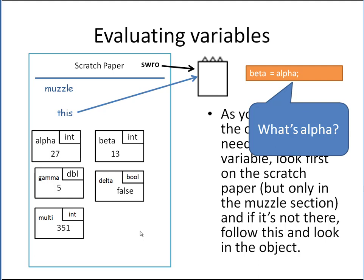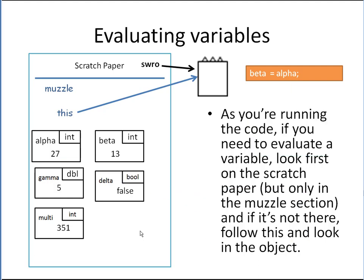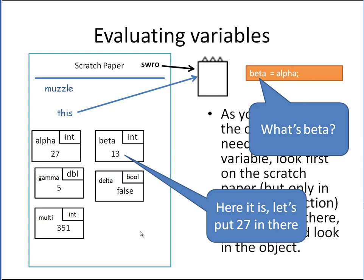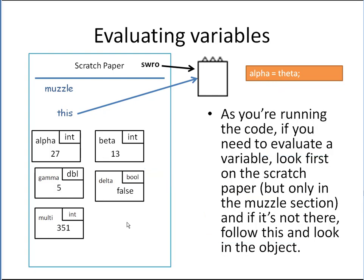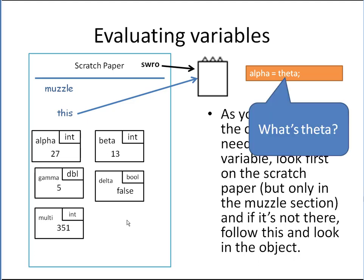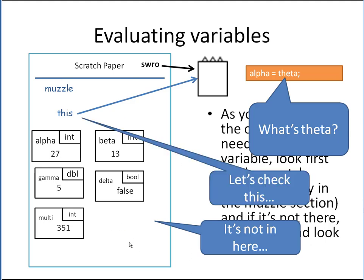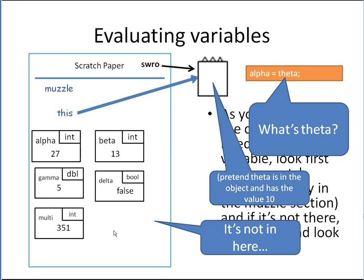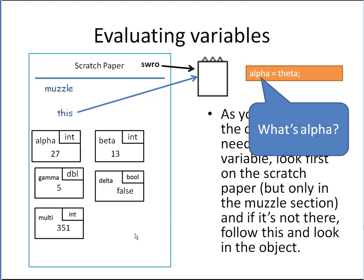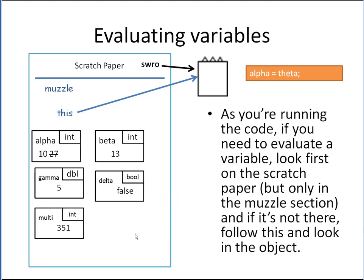For example, if we have 'beta = alpha': what's alpha? No problem, here it is, it's 27. What's beta? Here it is — put 27 in there. What if we say 'alpha = theta'? The system says: what's theta? Can't find it in our local variables, so it checks 'this' — looks in the object — and we'll pretend theta is in the object with value 10. So we put 10 into alpha.